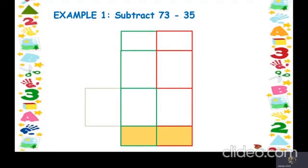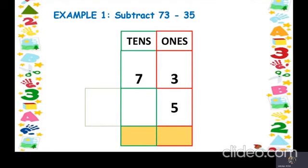Example number one: subtract 73 minus 35. The first step is to write the place value — ones and tens. The second step is to write the bigger number on top starting from the ones place. We have 73 as the bigger number, so we write 3 in the ones column and 7 in the tens column. Then we write 35 below: 5 and 3. Then put the minus sign.